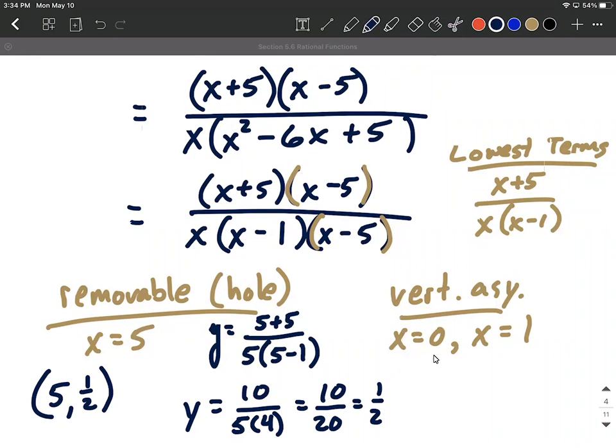Also our vertical asymptotes both at x equals zero, the y-axis, and x equals one. Hope this helps out as you're working on locating discontinuities, both removable discontinuities and vertical asymptotes. Good luck. We'll see you guys next time.